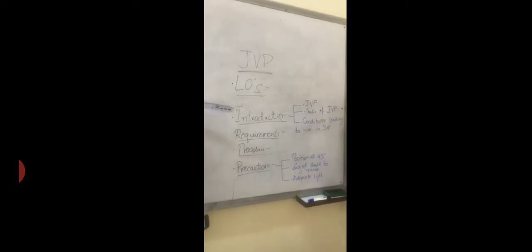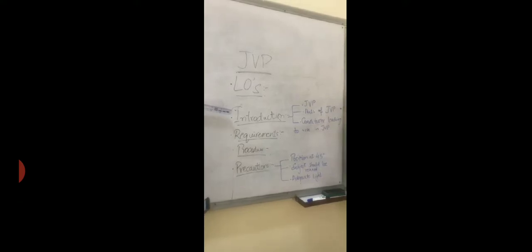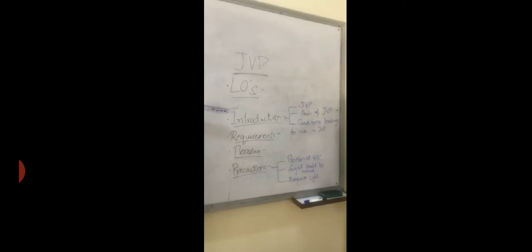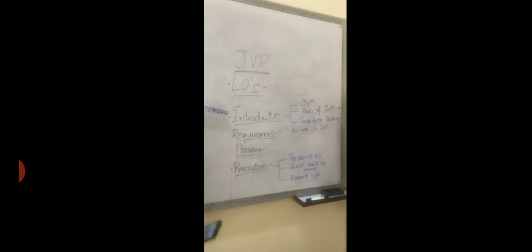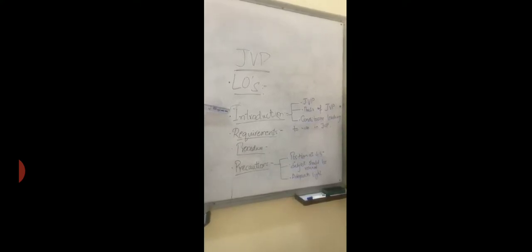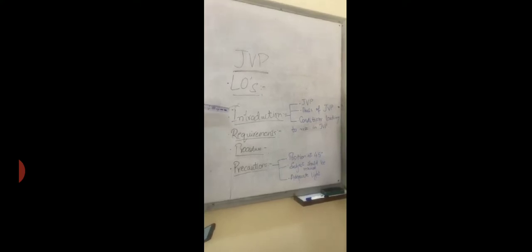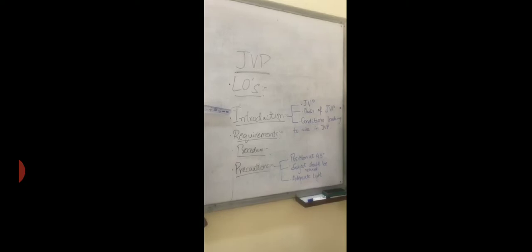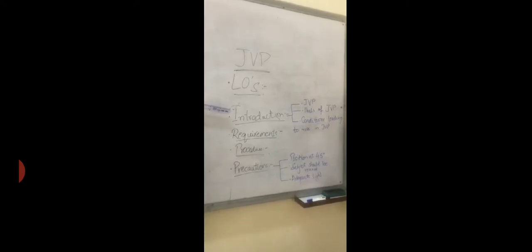In the introduction, you should know the definition of JVP. JVP is a wave of rhythmic expansion in the jugular vein due to pressure changes in the right atrium. What we see is visible, we will measure JVP as indirect methods. There are two methods, direct methods and indirect methods.